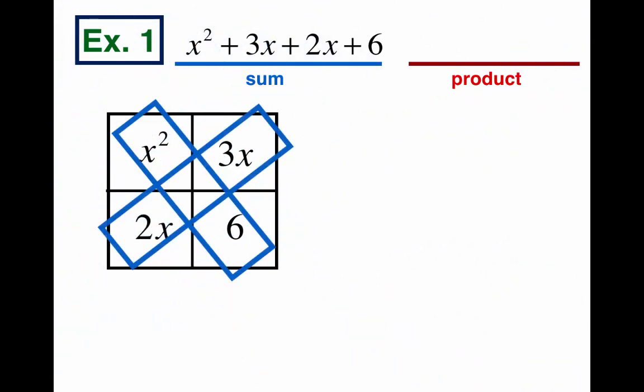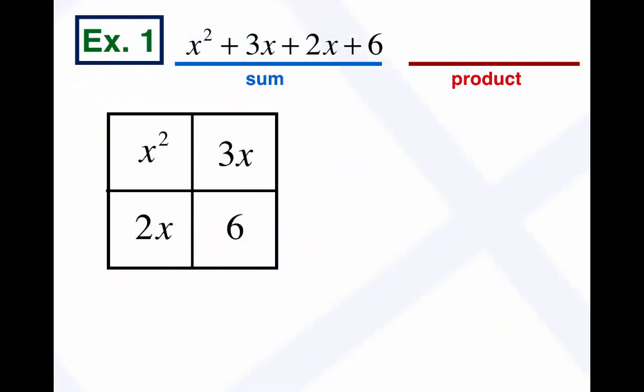Now the reason I'm doing that is because we learned in class that you have to make Casey's rule work. And Casey's rule is our nickname for the fact that the diagonals have to multiply and be the same. x squared times 6 is 6x squared. 2x times 3x is 6x squared. They're the same thing. So that's really important that that's true for the rectangle to work.